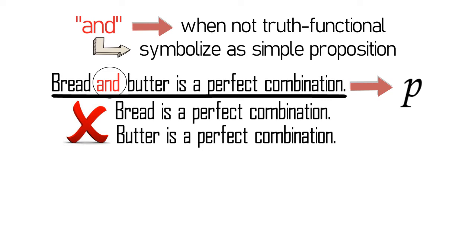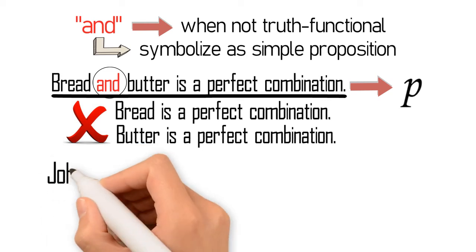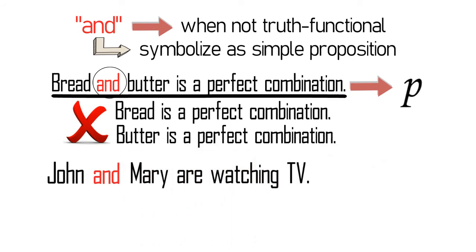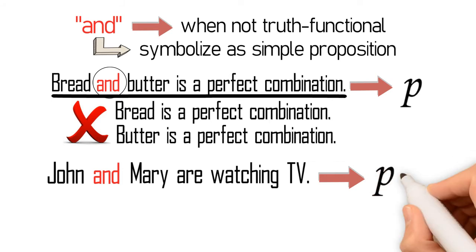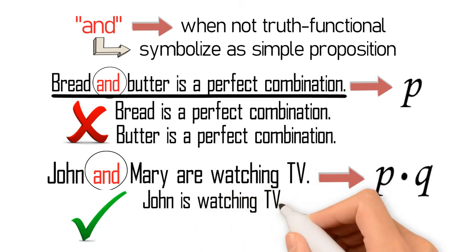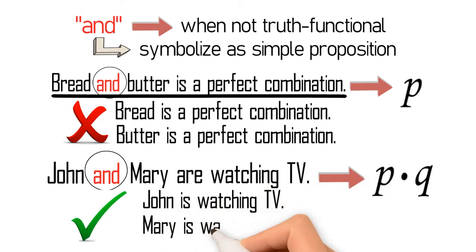However, if we have the example 'John and Mary are watching TV', then we have to symbolize this as P · Q. This is because the 'and' here is truth-functional — it connects two independent propositions. It is possible to say that John is watching TV and Mary is watching TV; in other words, both John and Mary are watching TV.